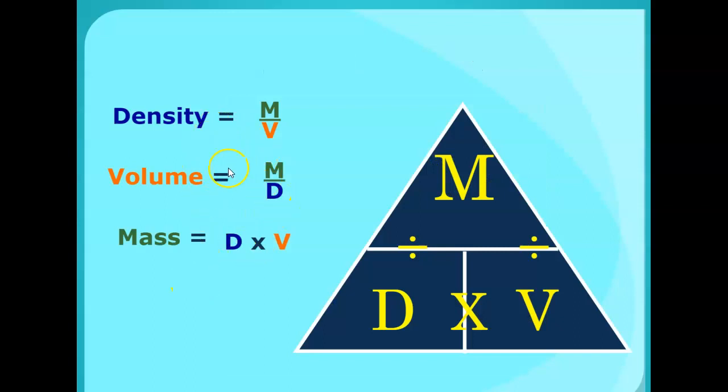Here are the other formulas that you can use the triangle for. Again, we're just focusing on density. But if you were missing the volume, you could take the mass divided by the density to get the volume. Or if you were missing the mass, you could take density times the volume, and that will give you the mass.